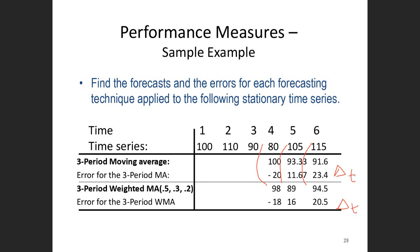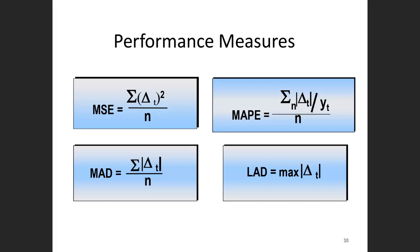The three-period moving average method is represented as MA and the weighted moving average method as WMA. Once we have the errors, we apply the statistical performance measures. The mean square error (MSE) is computed by squaring all the errors, making a summation, and dividing by n.